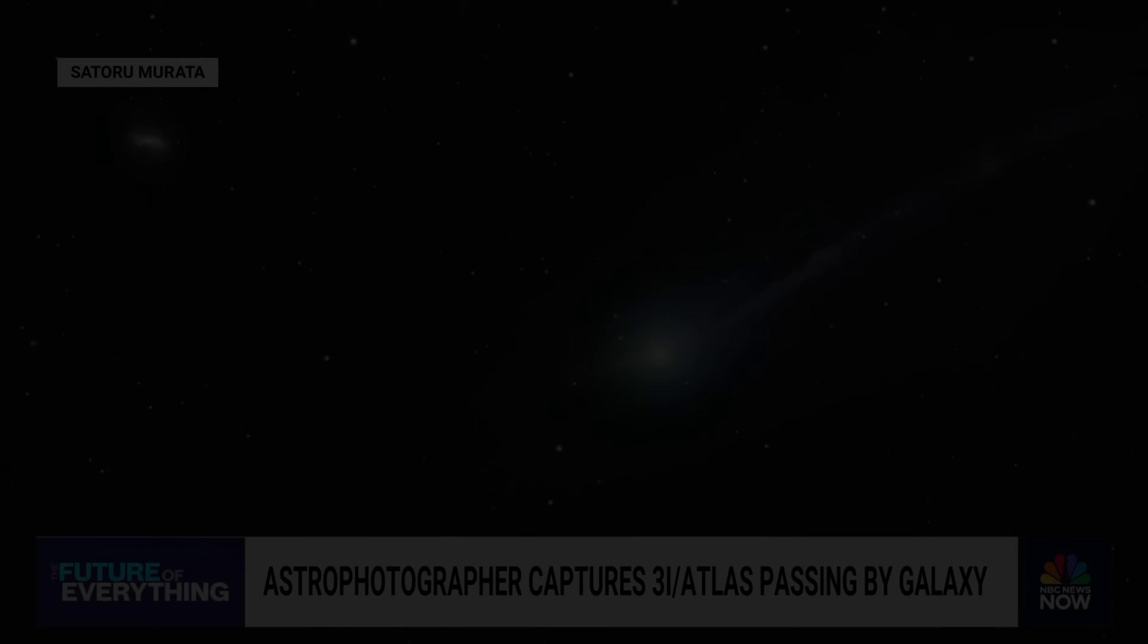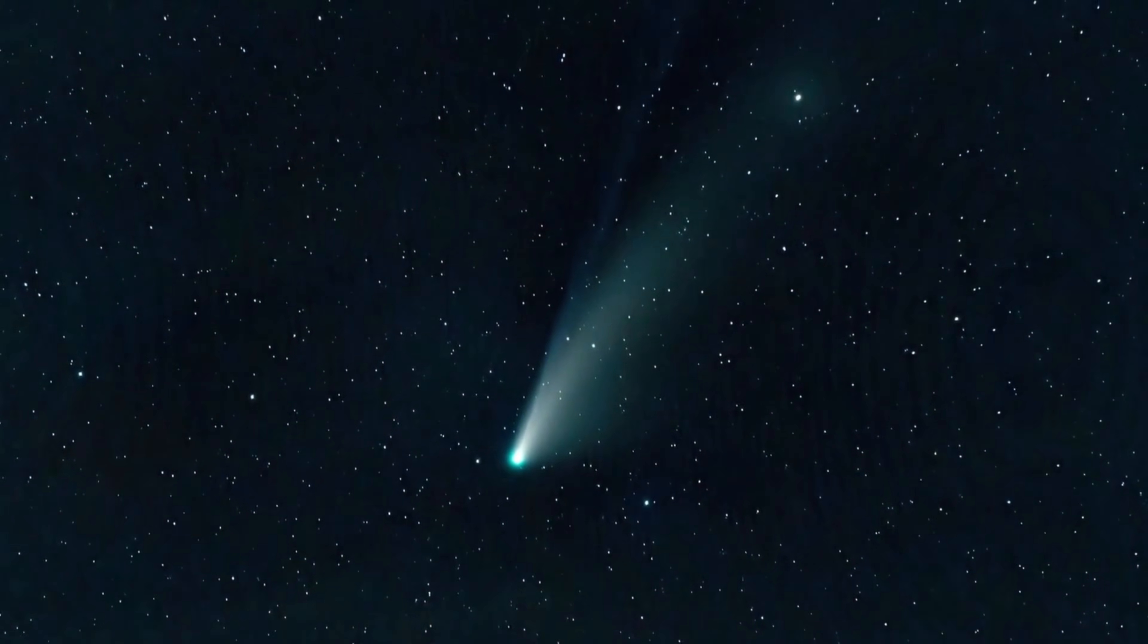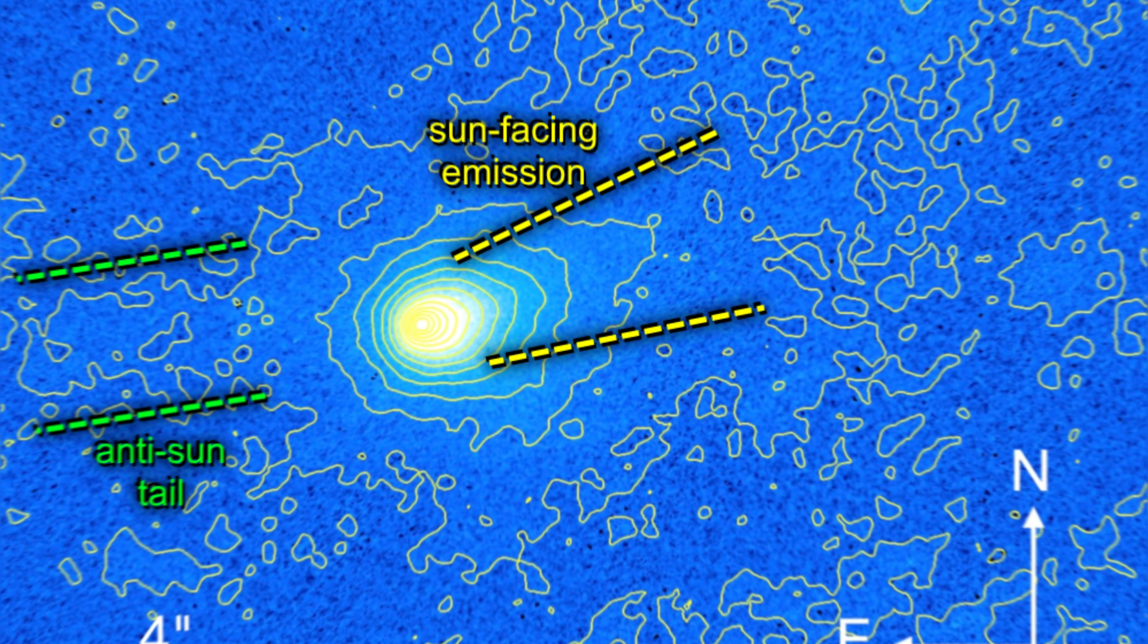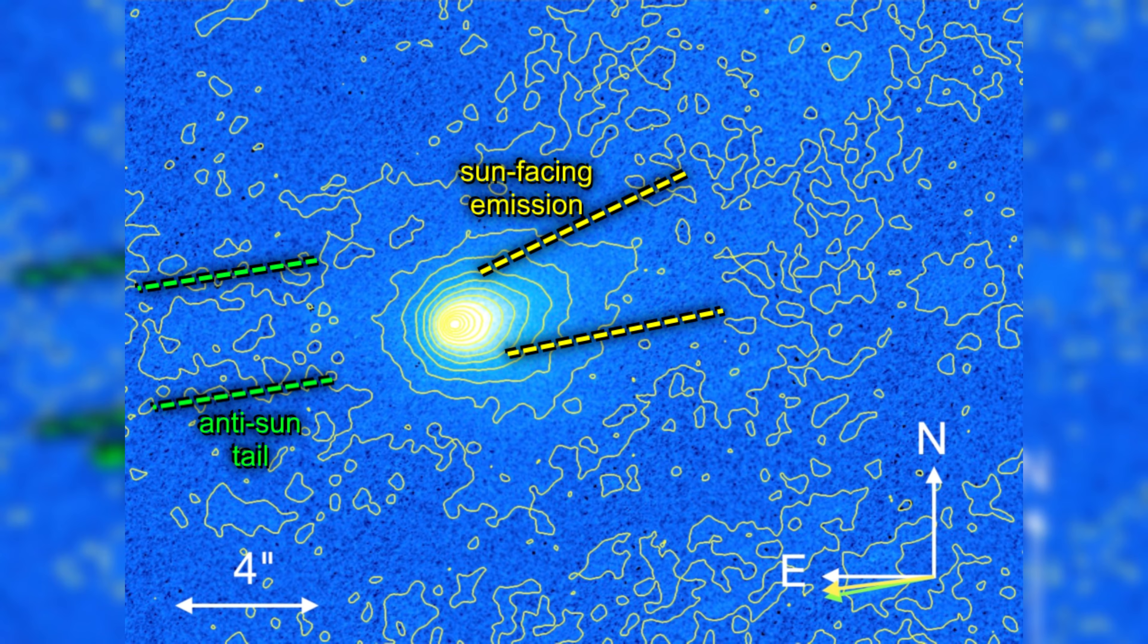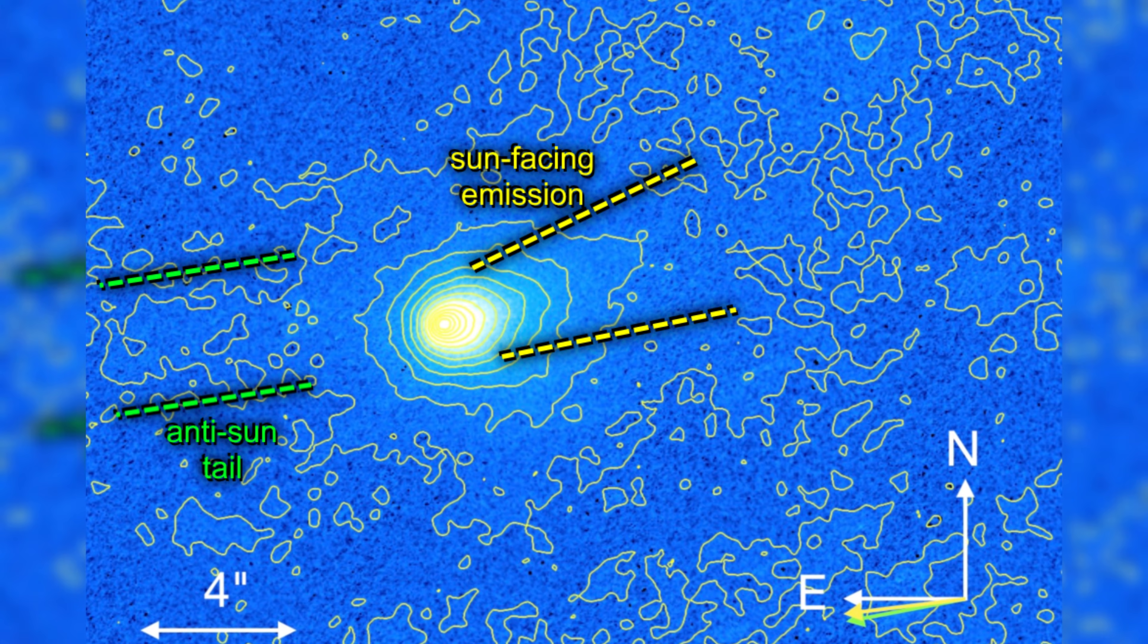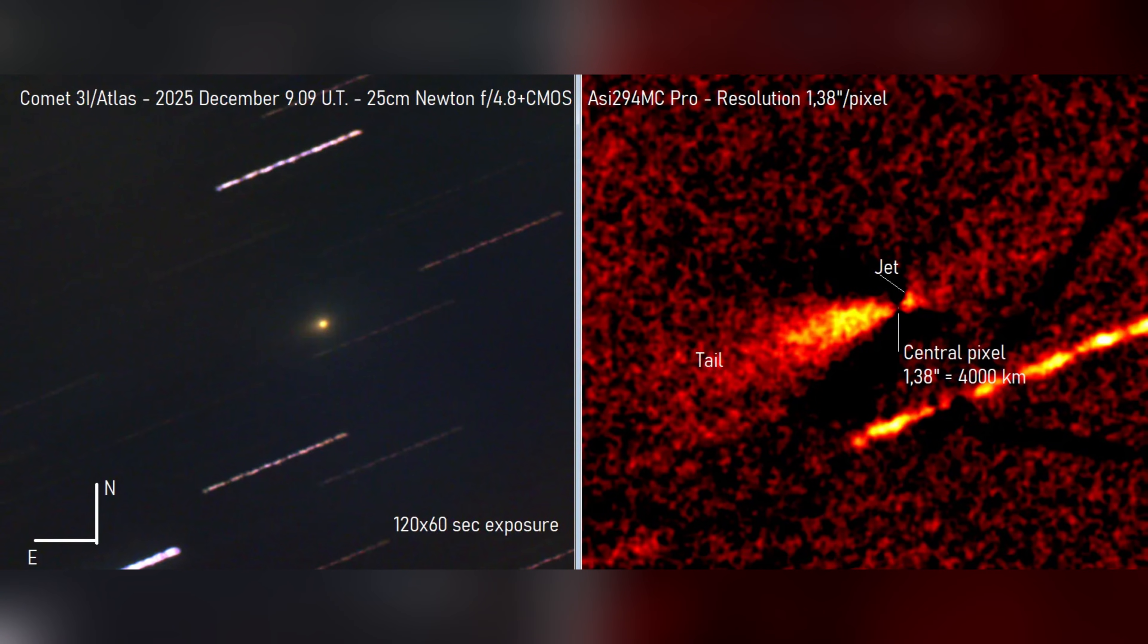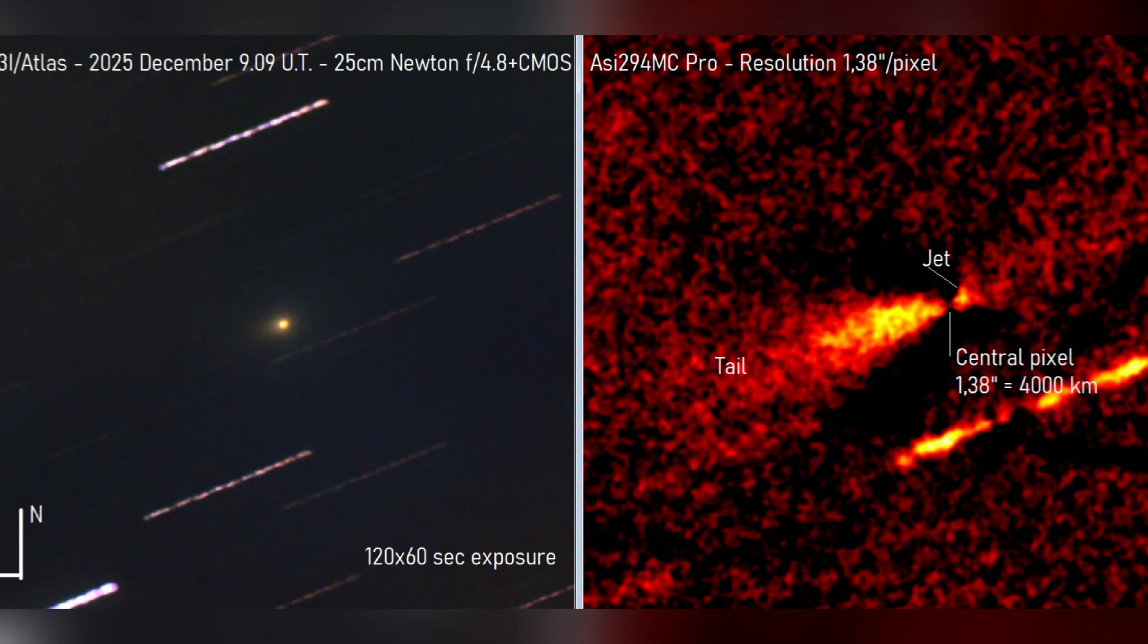This is highly unusual. Comets typically stop emitting gas in a specific direction once they pass perihelion, as the intensity of solar radiation decreases. Yet 3I Atlas continued its jetting behavior, suggesting that there is something different about the object's internal makeup or structure. The continued emission of material suggests that the object is not behaving as a typical comet would.